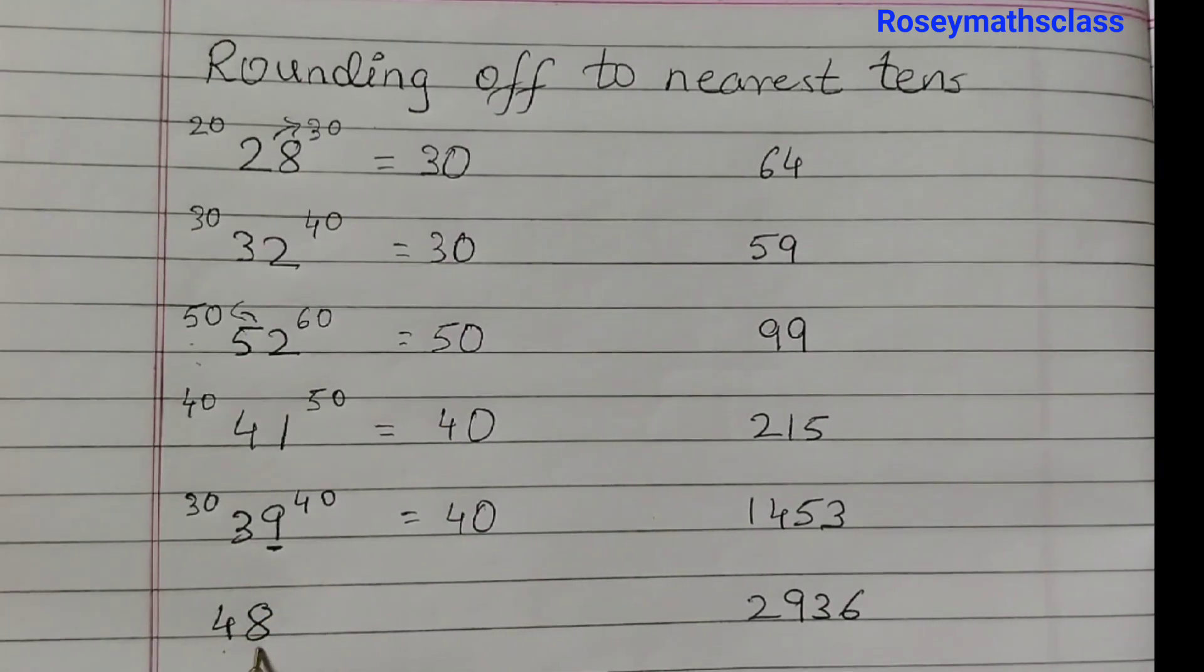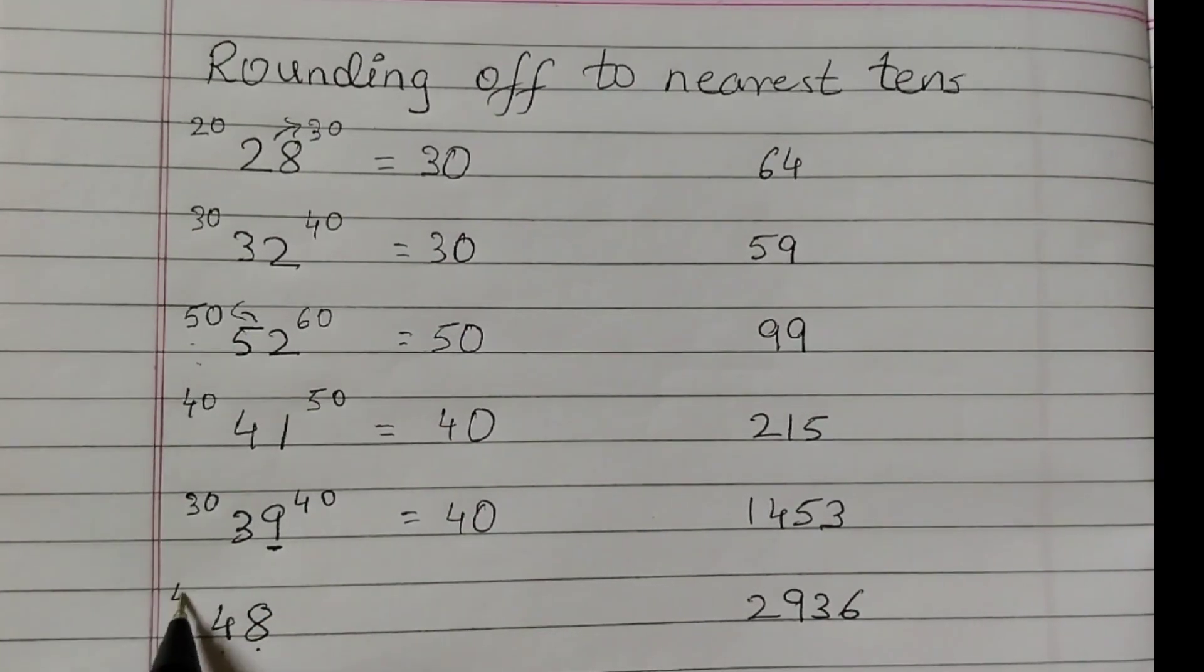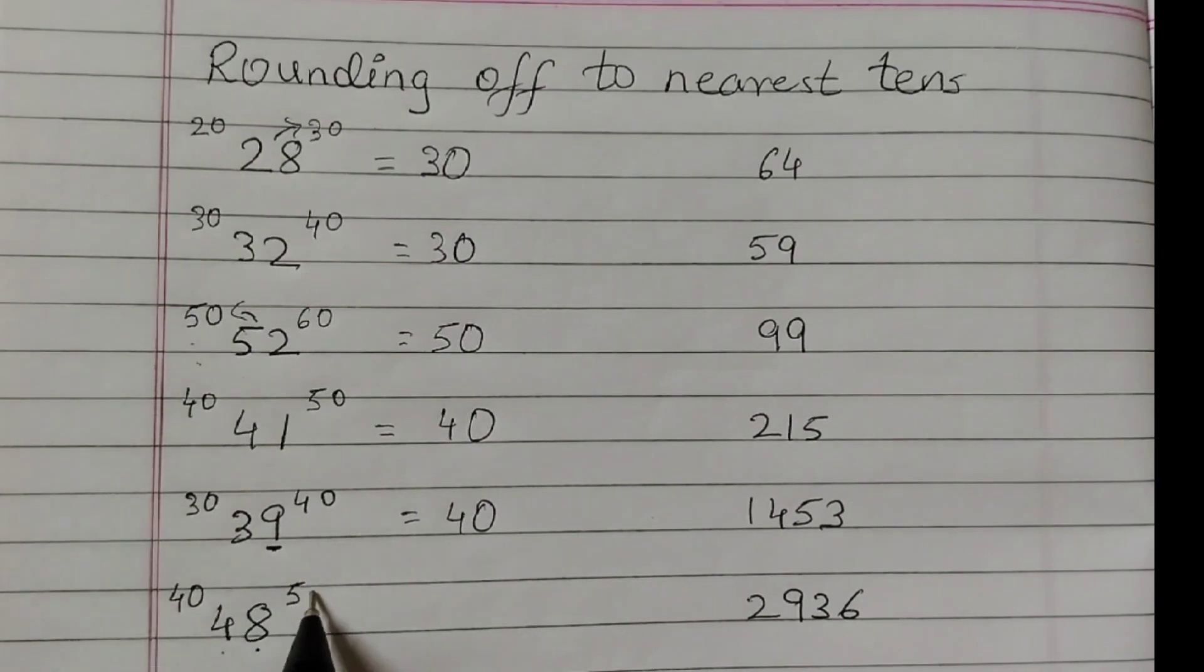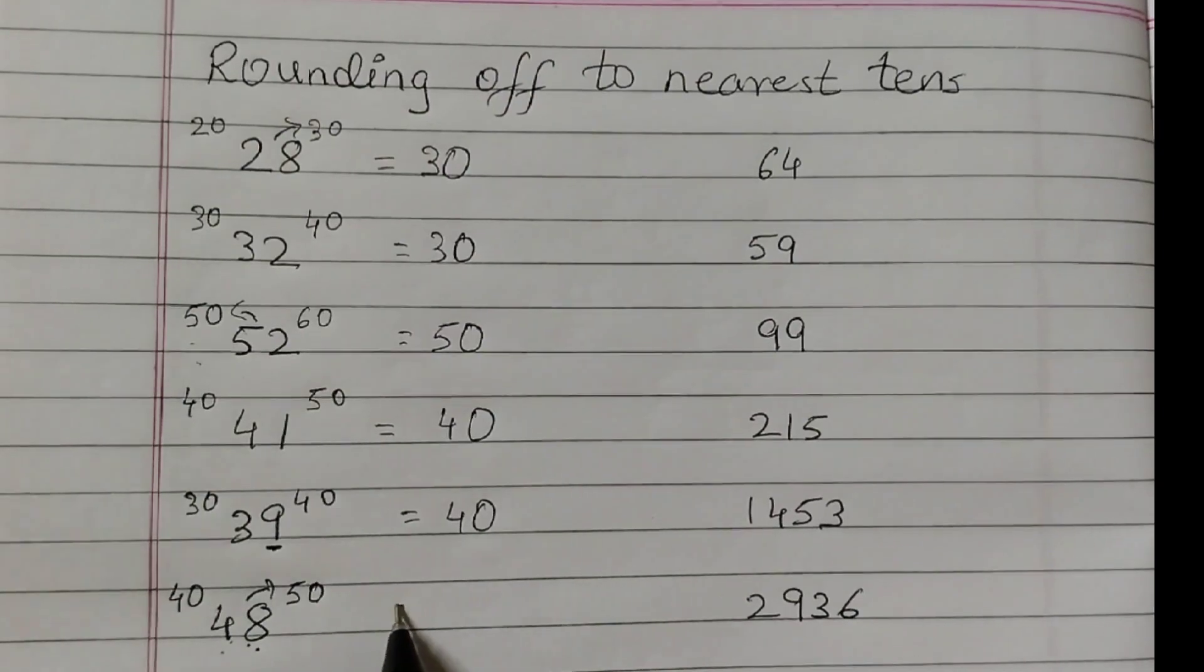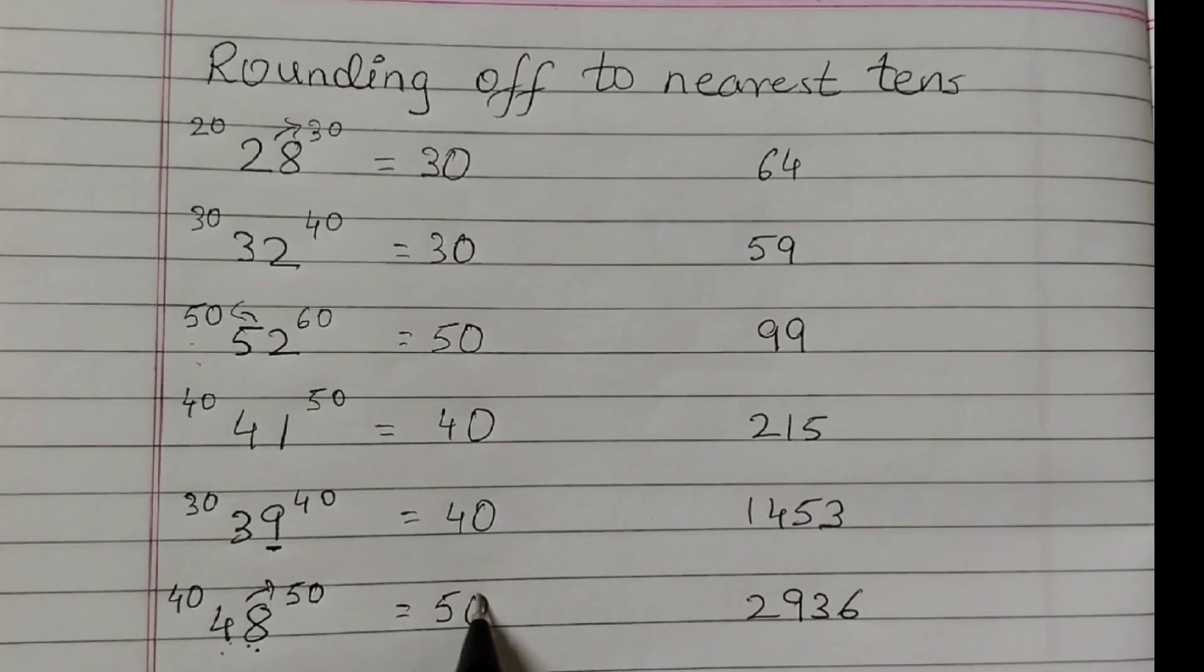48 is between 40 and 50, and 48 is closer to 50. So rounded off to 50.